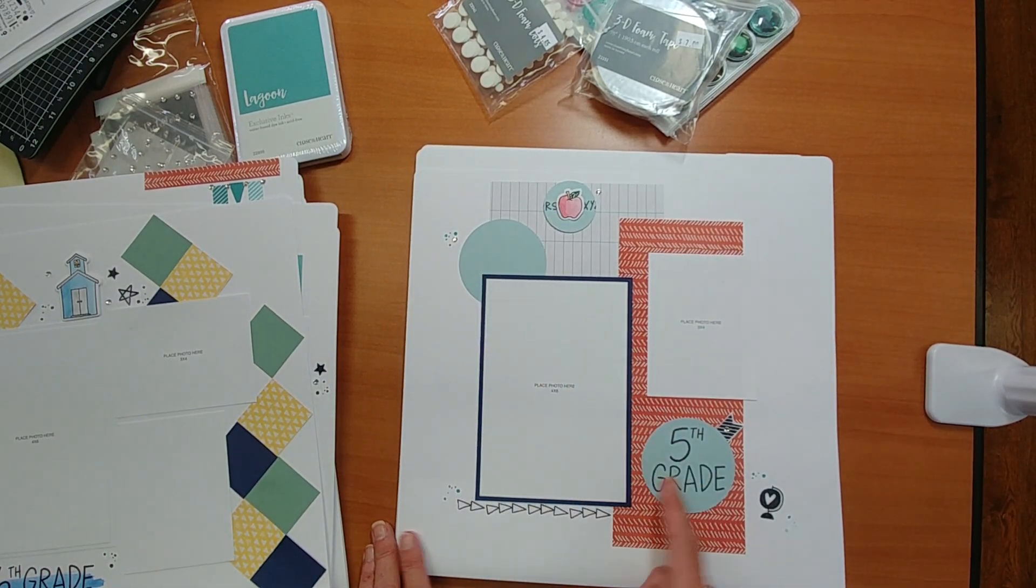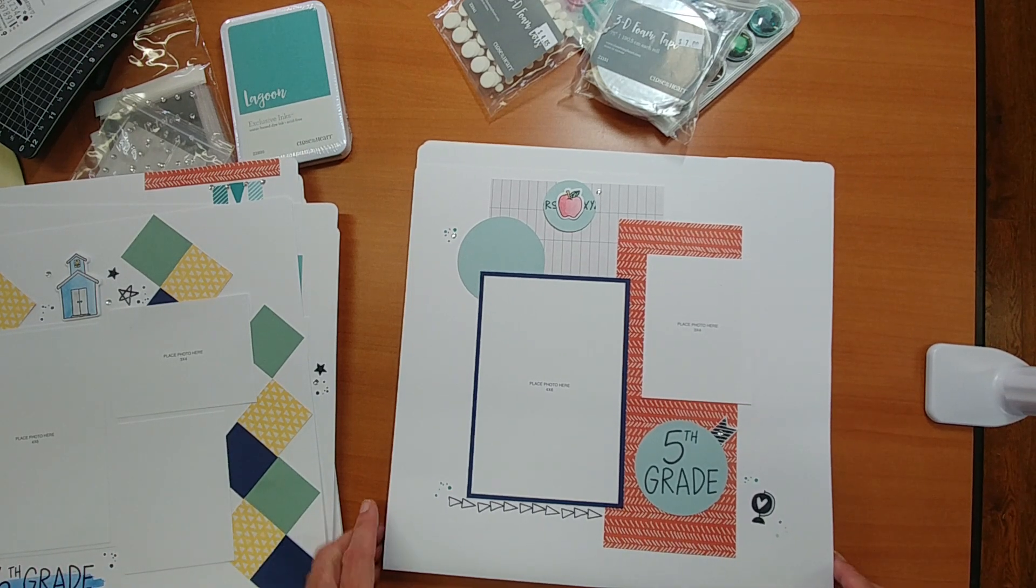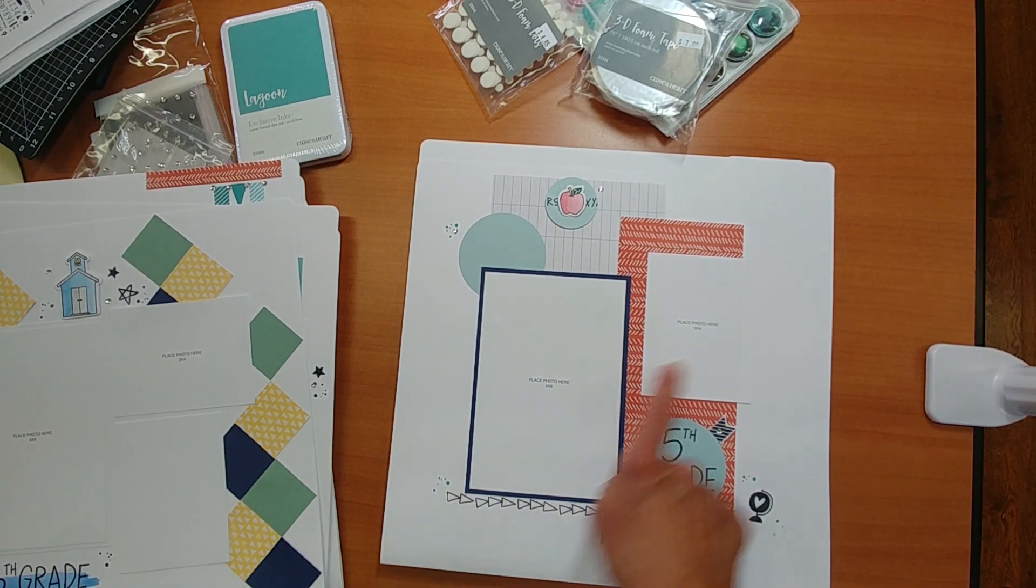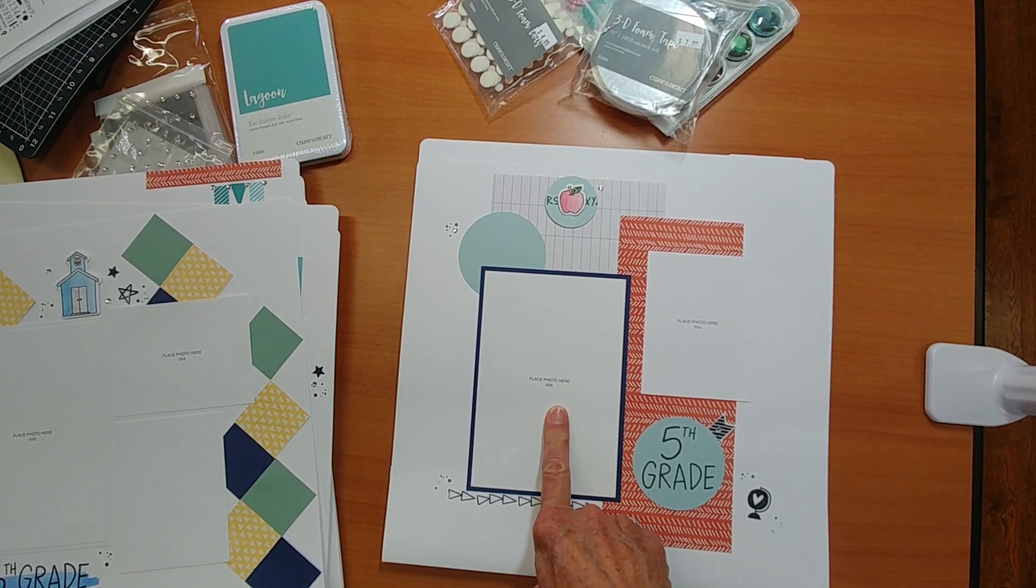Now do you notice the circles? If you don't have a Cricut, those size circles, you can always do squares. Don't feel that you're limited. But these spots here are where you can add flip flops. The 3x4 or the 4x6.